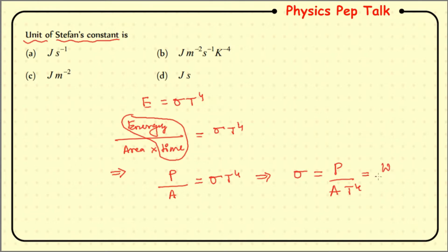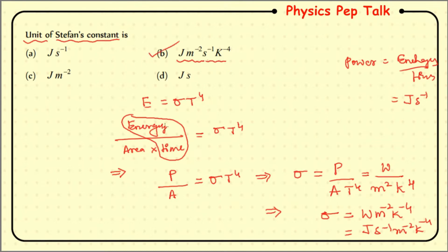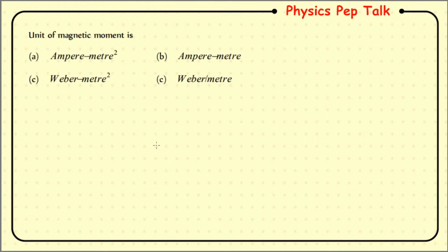We know that unit of power is watt, unit of area is meter square, and temperature unit is Kelvin to the power of 4. This implies the unit of sigma is watt per meter square per Kelvin to the power of 4. Since power is energy divided by time, that is joule per second, we get joule per second per meter square Kelvin to the power of minus 4, which is J·m⁻²·s⁻¹·K⁻⁴. Therefore option B is the correct answer.